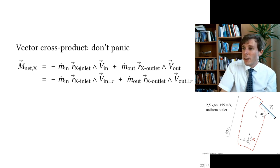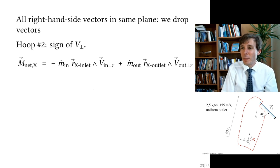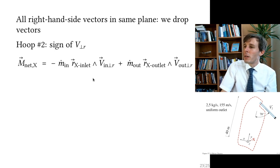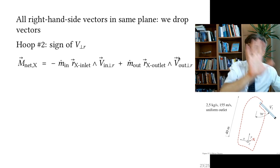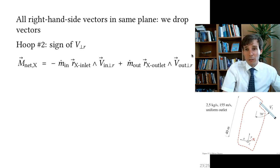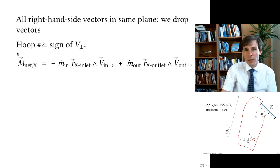The cross product of r with this perpendicular component equals the cross product of r with the original v_n — but it is much easier to calculate. Then we remove the vector notation, because all vectors r and v lie in the same plane, so all resulting moment vectors are aligned — pointing either into or out of that plane.